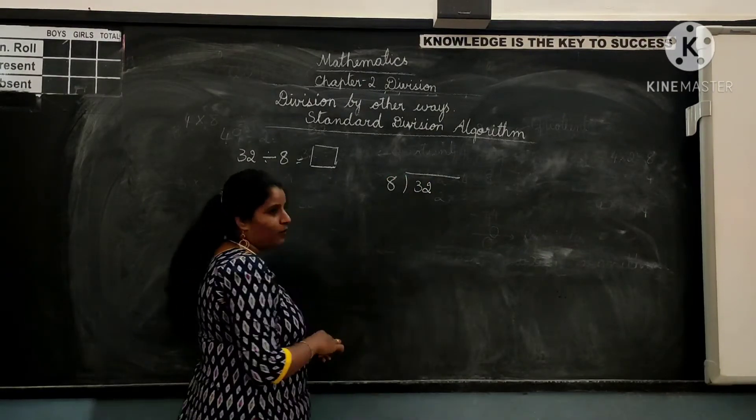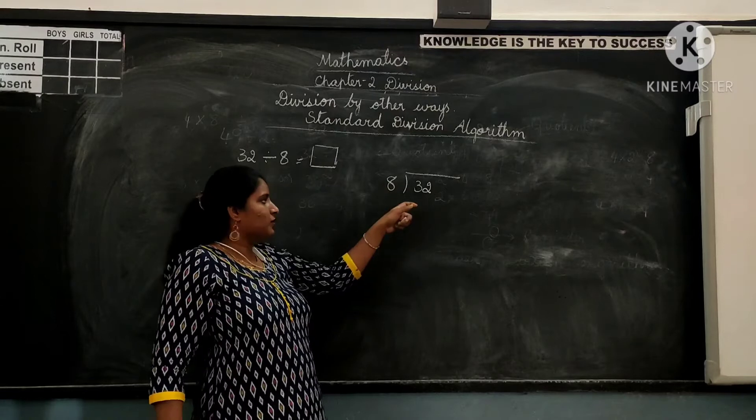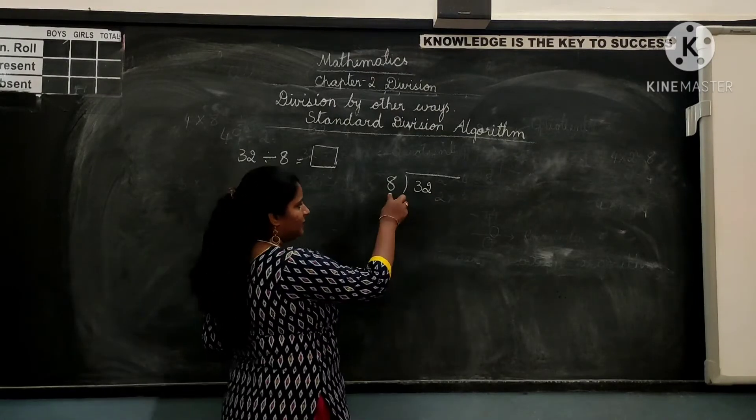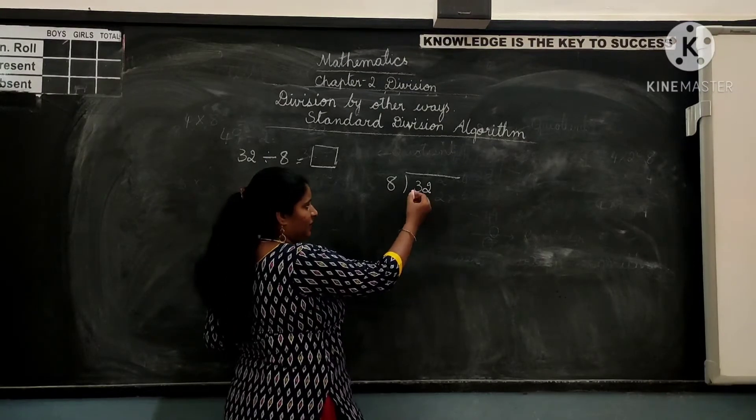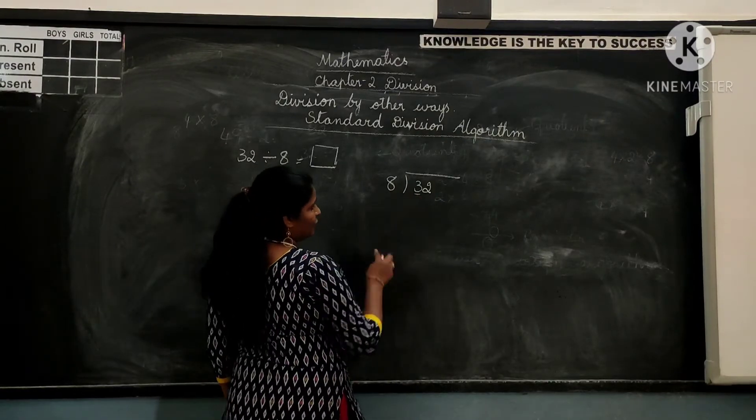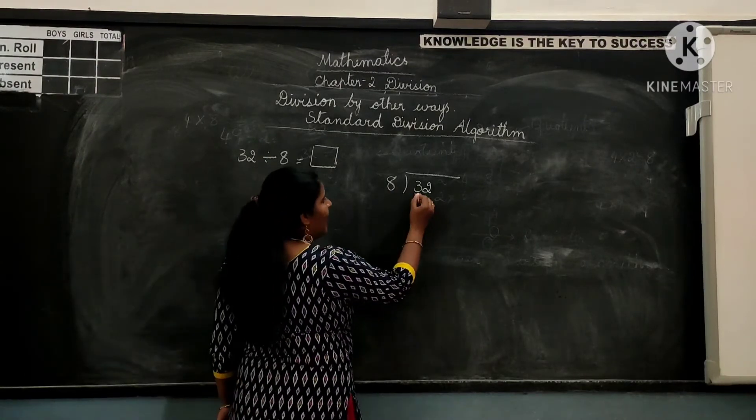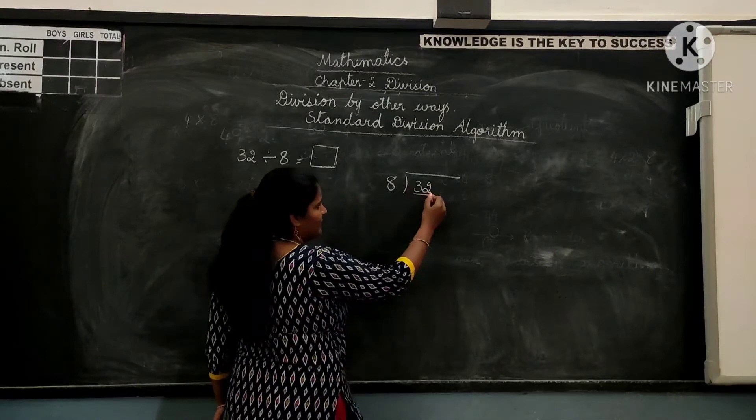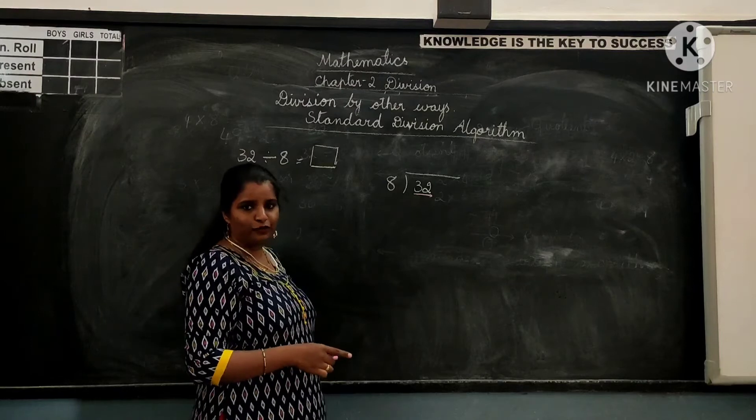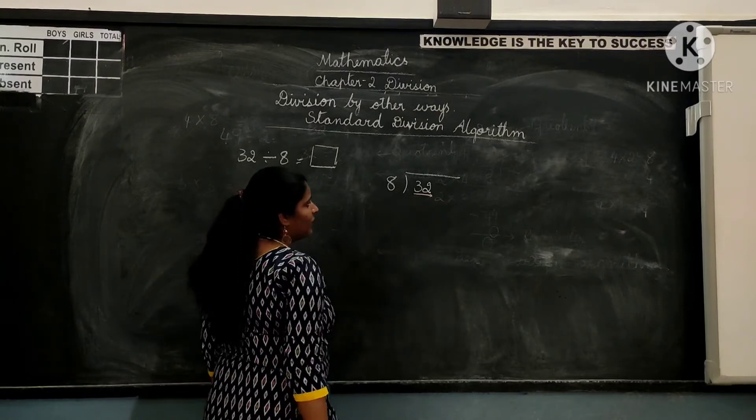Dividend 32 divided by 8. So as we said we have to take one number at a time. We have to start division from the digit in the highest place of the dividend. So we cannot divide 3 by 8. So can we say that 3 is a remainder? No. When 1 digit is less than the divisor, you have to take 2 digits from the dividend from that side.